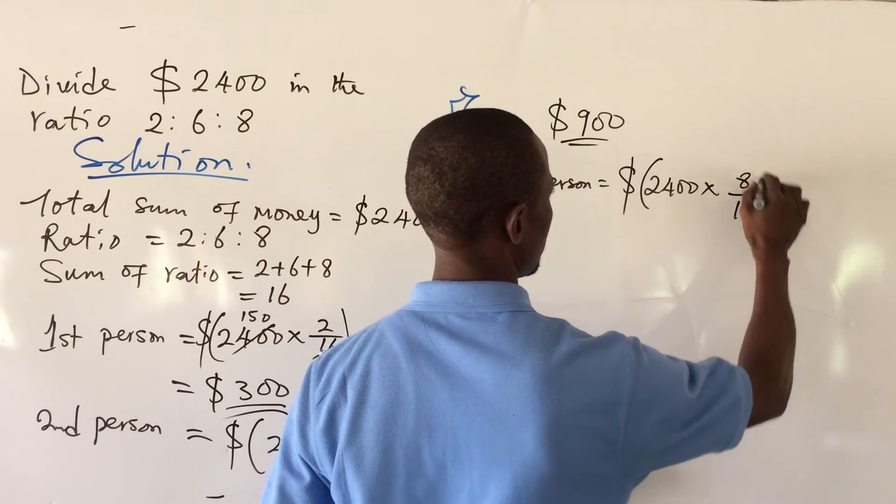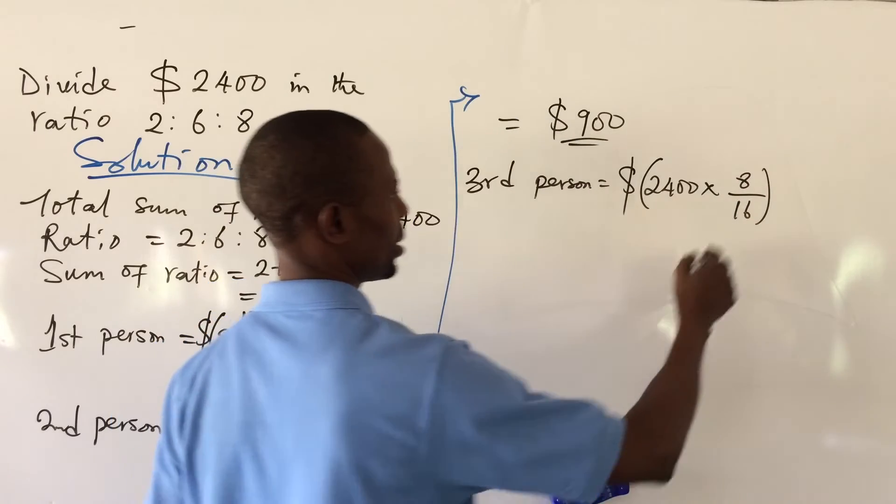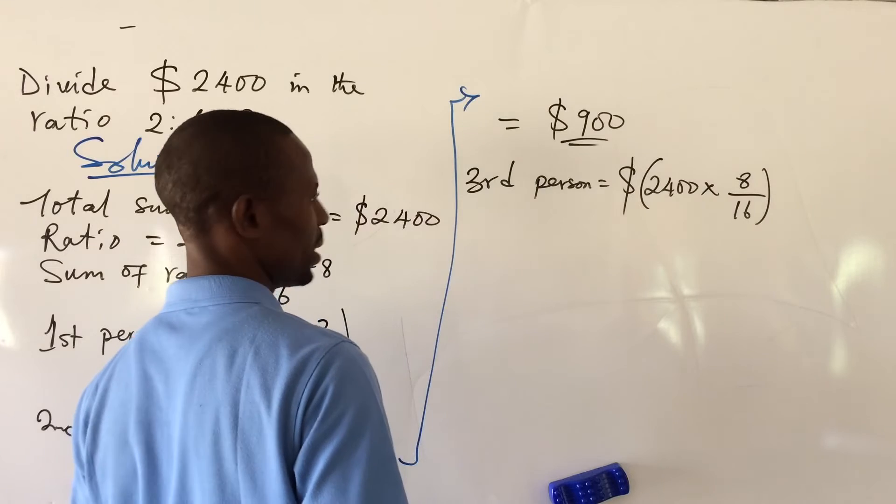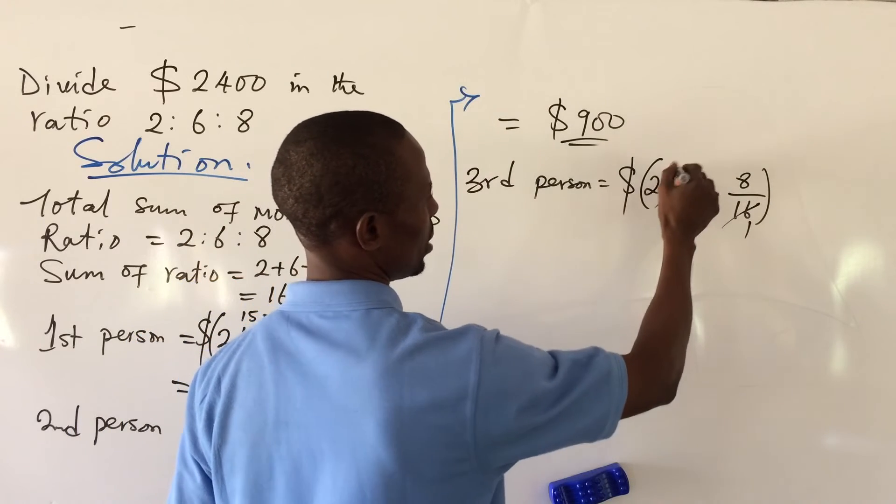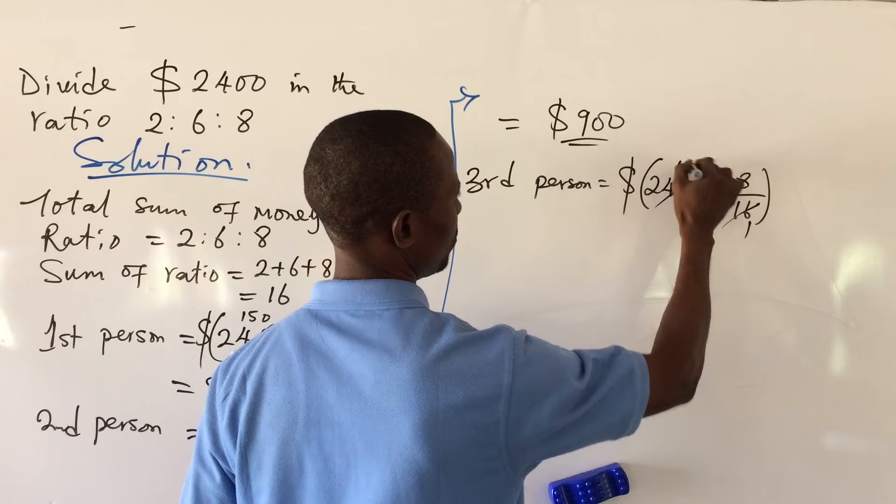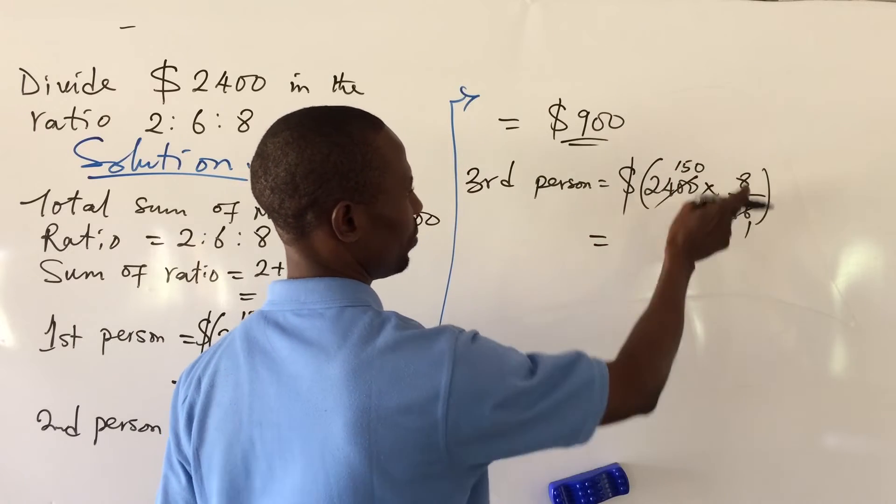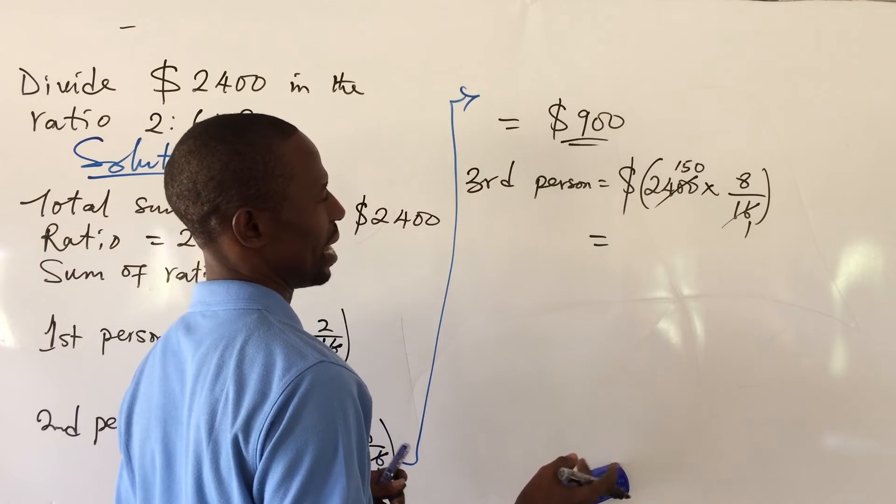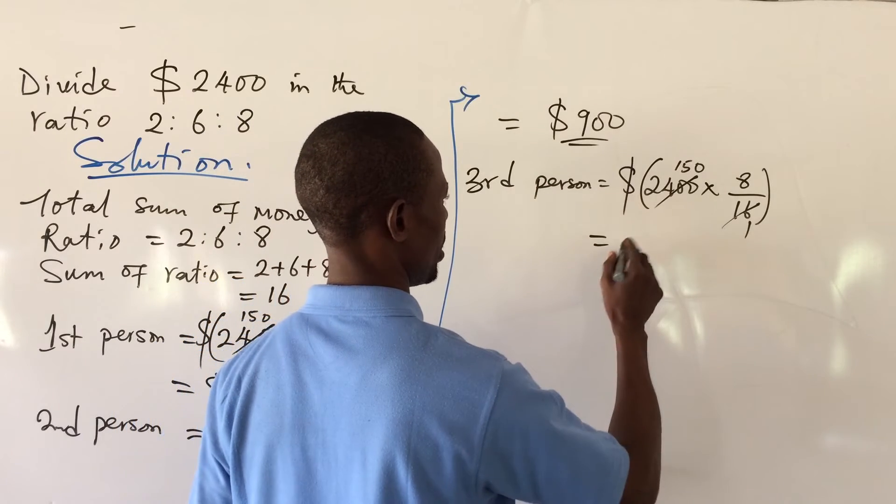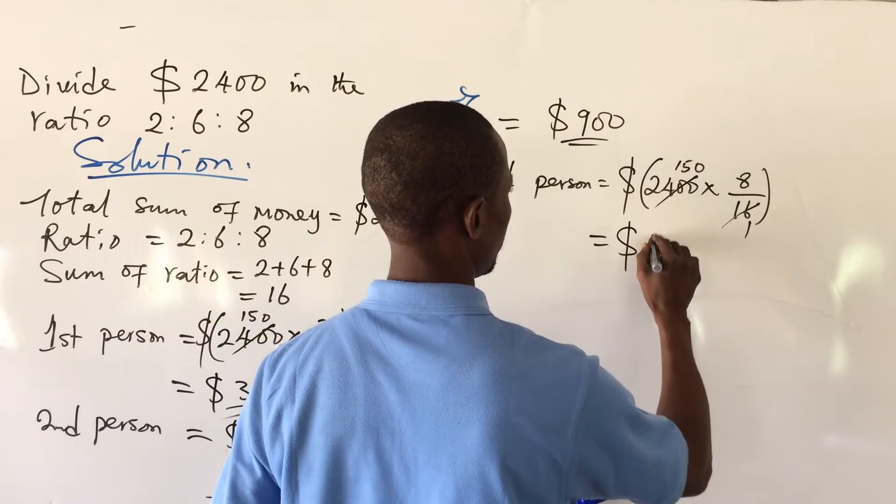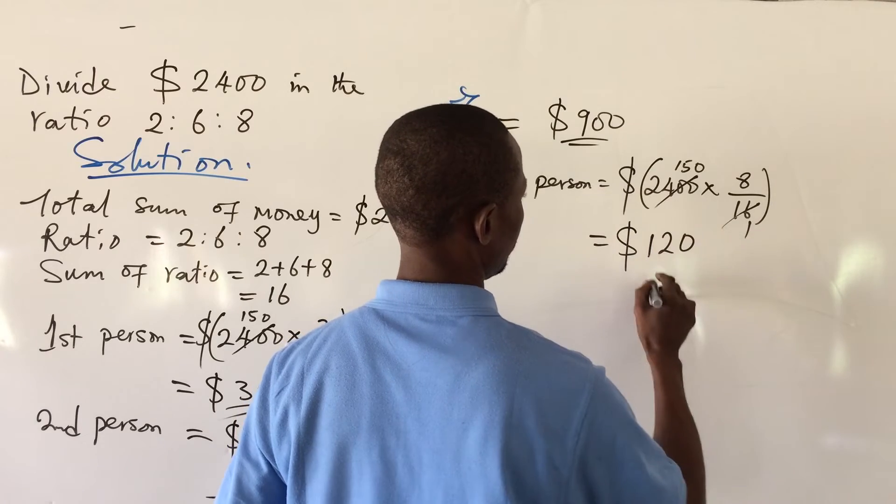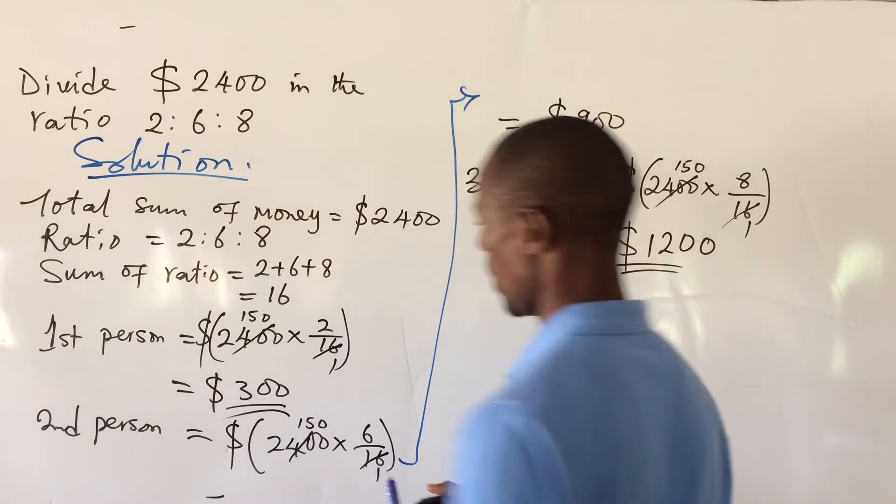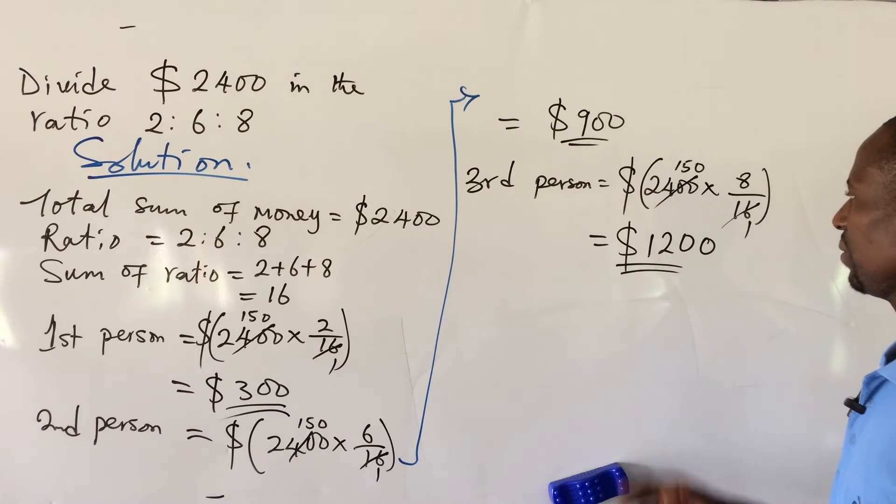Third person, we have $2400 times your ratio, which is 8, all over 16, close bracket. We do the same again. 16 into 1, 16 here will give us 150, and 150 times 8 gives us 1200. So have this to be $1200.